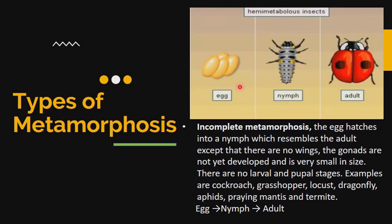So you can see that there is no larva stage and no pupa stage. You only see egg, then nymph, then adult. These are the three stages involved in incomplete metamorphosis, also called hemimetabolous. Remember, complete metamorphosis is holometabolous, while incomplete metamorphosis is hemimetabolous. Examples of organisms that undergo incomplete metamorphosis are cockroaches, grasshopper, locust, dragonfly, aphids, praying mantis, and termites.